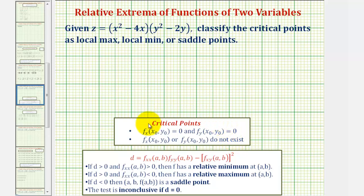Once we find the critical points, we'll determine the value of D using the second order partials, and then based upon the sign of D and the sign of the second order partial with respect to x, we can determine whether we have a relative min, relative max, or saddle point at the critical points.